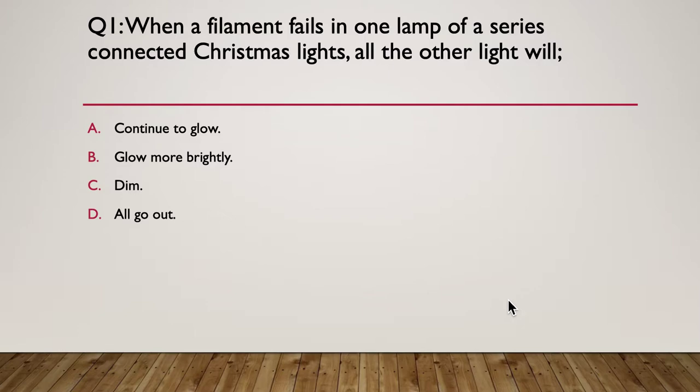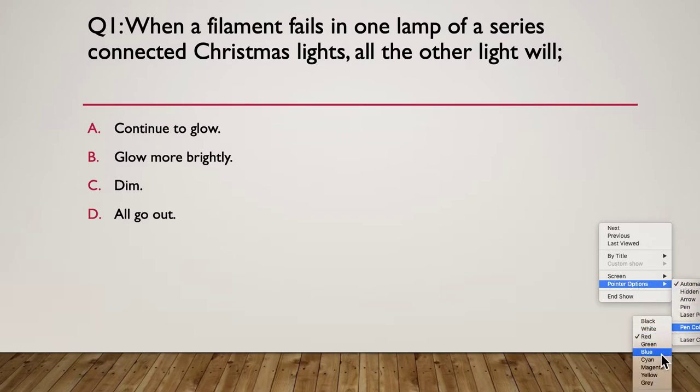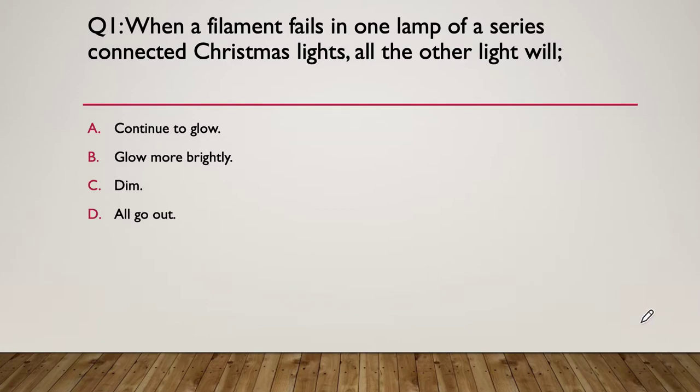Question one: when a filament fails on one lamp of a series connected set of Christmas lights, all the lights will do what? A, continue to glow; B, glow more brightly; C, go dim; or D, they'll all go out. So have a think about it. Often pays to draw a little diagram. Here's the hint: it's all about current that does the work. So what's happening to current? So what is the result?